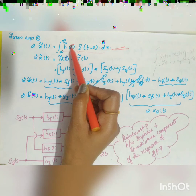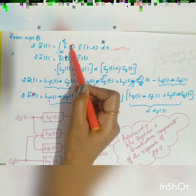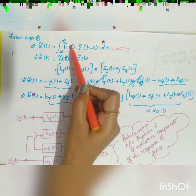Comparing both sides: 2·xi(t) = hi(t)*si(t) − hq(t)*sq(t), and 2·xq(t) = hq(t)*si(t) + hi(t)*sq(t).